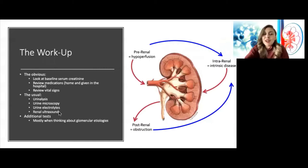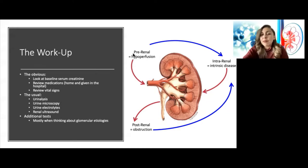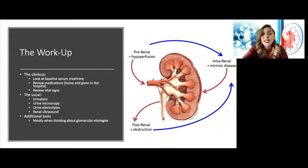I like to describe the workup of AKI as the obvious, the usual, and then what else do we test. Our main framework is thinking about pre-renal, post-renal, or intra-renal AKI. Pre-renal is anything that leads to a drop in perfusion pressure to the kidney. The kidney is very greedy — if it suddenly doesn't get what it's used to, it's going to freak out. When the pre-renal injury is prolonged, it can lead to an intra-renal injury with intrinsic damage.